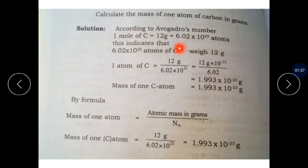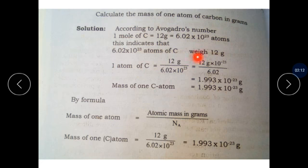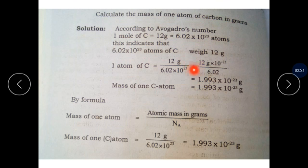You can follow the same method as in the previous numerical. The given information goes on the left-hand side and the required goes on the right-hand side. One atom of carbon is equivalent to 12 divided by 6.02 × 10²³. When 10²³ moves to the numerator side, the positive sign changes to a negative sign, becoming 10⁻²³. Dividing 12 by 6.02 gives 1.993 × 10⁻²³ grams.